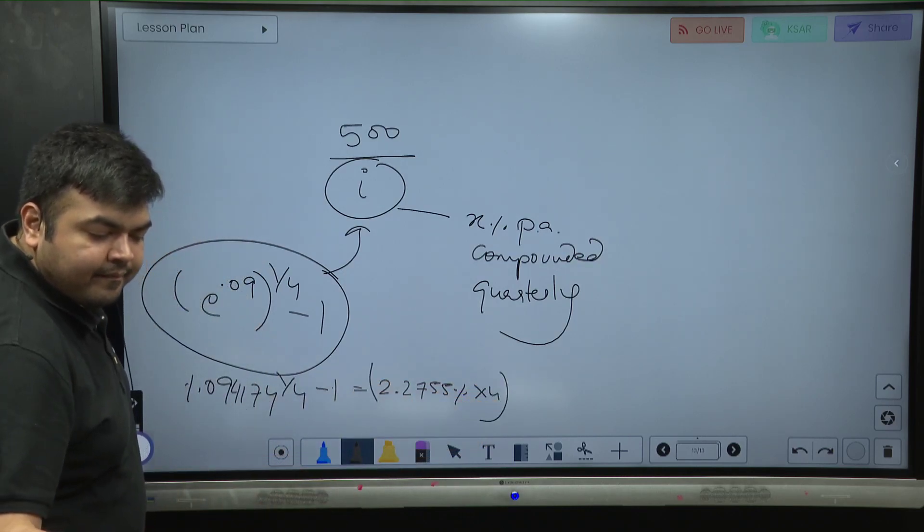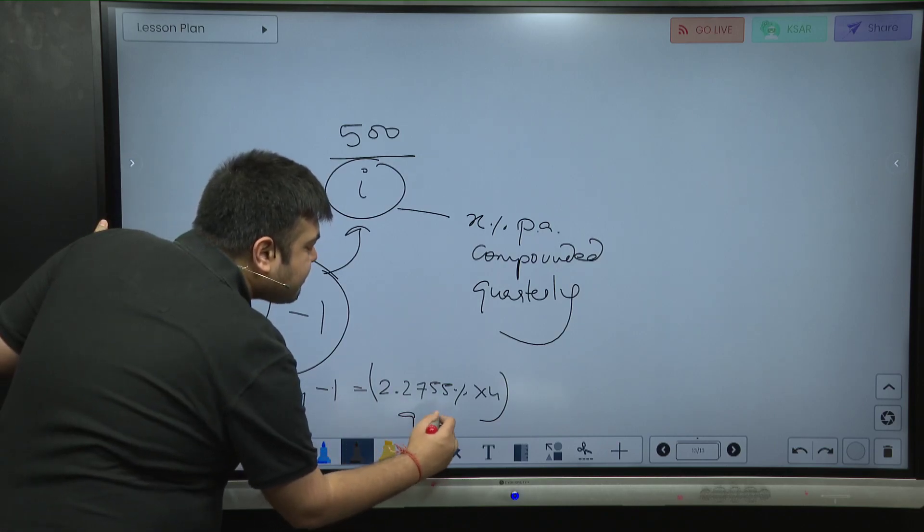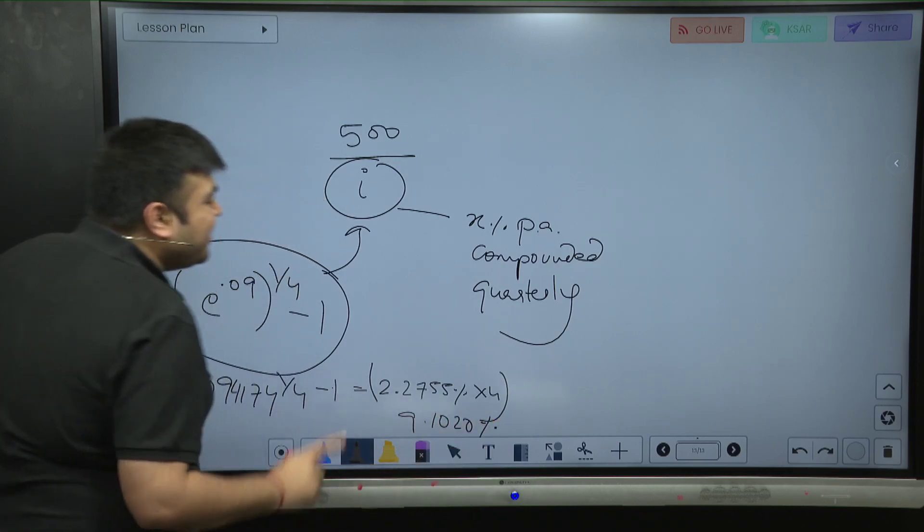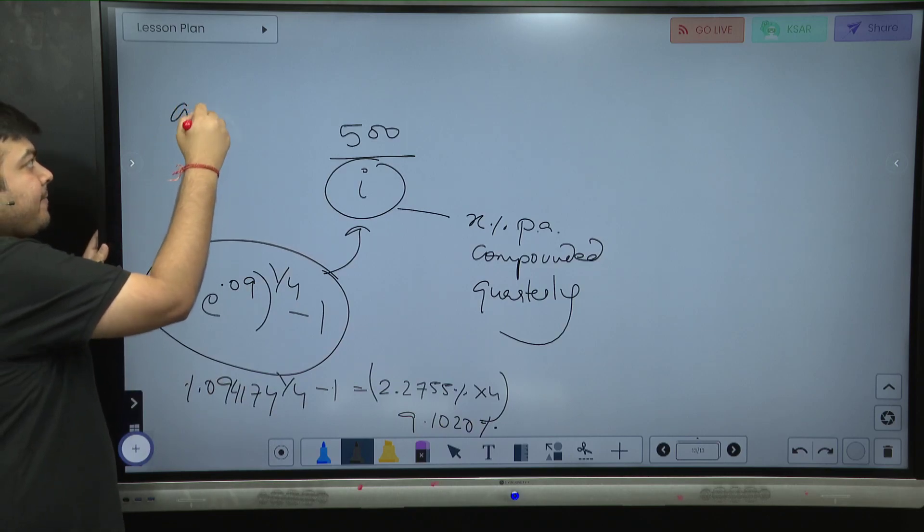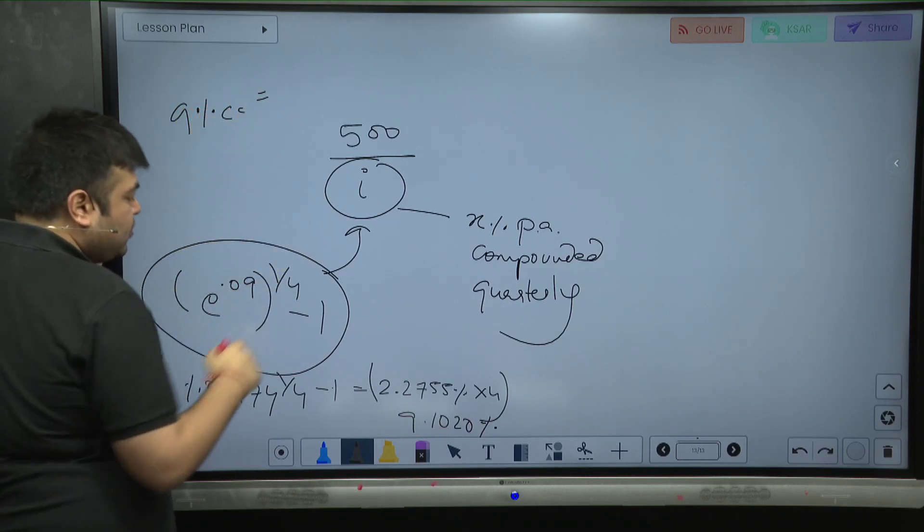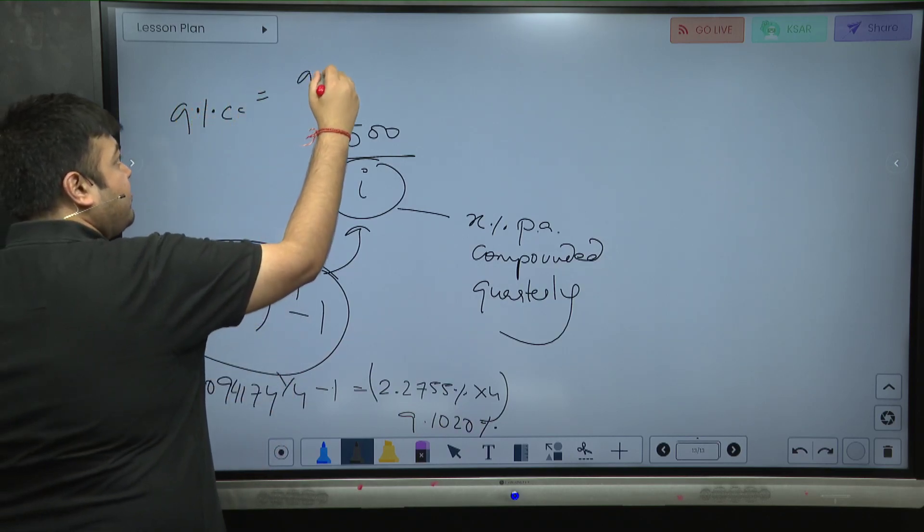So basically 9% CC is equal to 9.417174% annual.